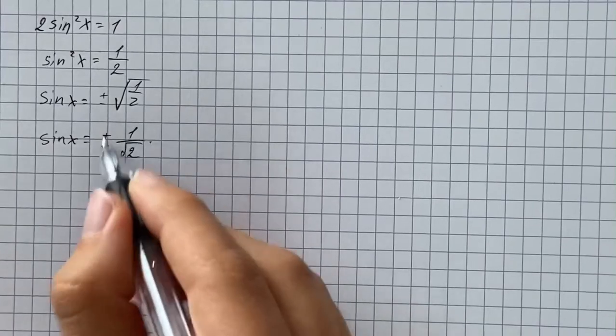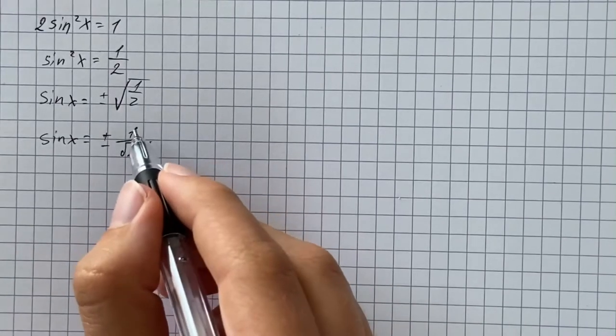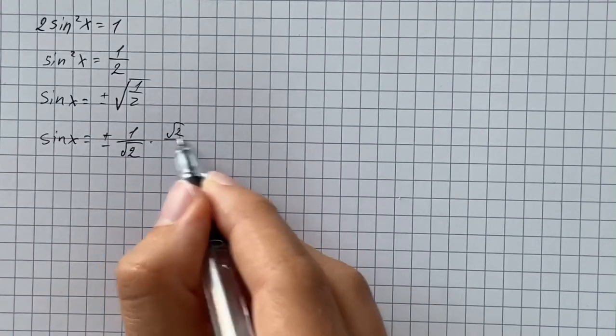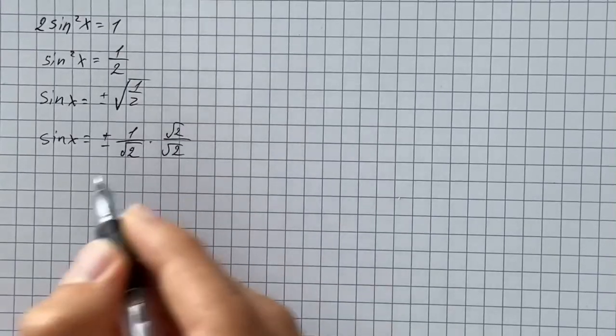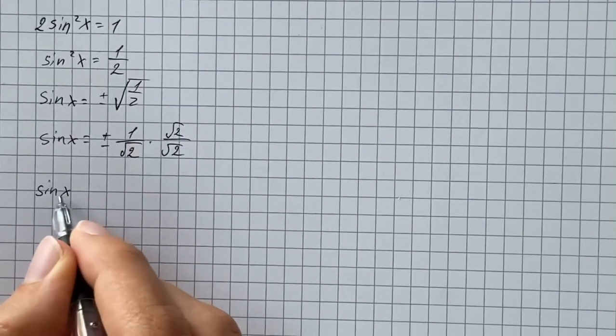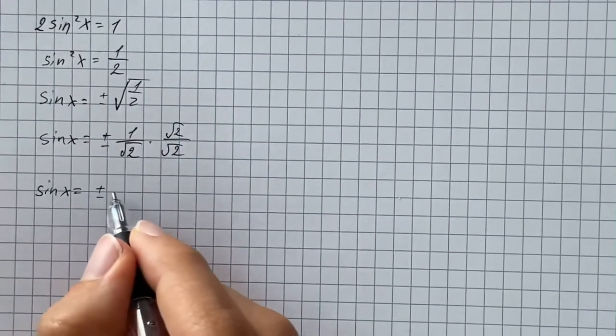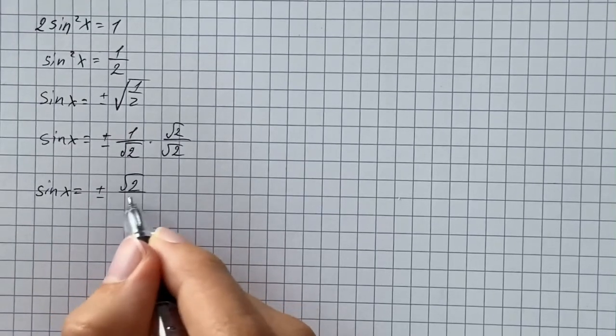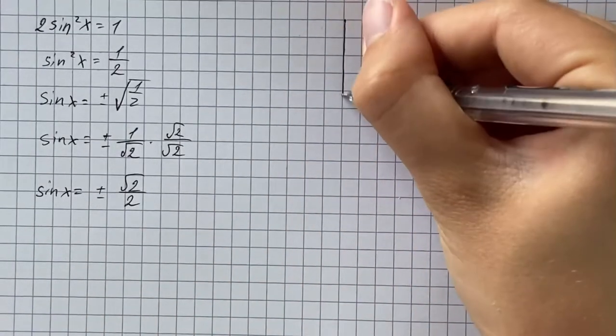Now we're going to rationalize this, so we'll multiply both numerator and denominator by square root of 2. Now we have to find where sine of x equals square root of 2 over 2. So we're going to use the unit circle.